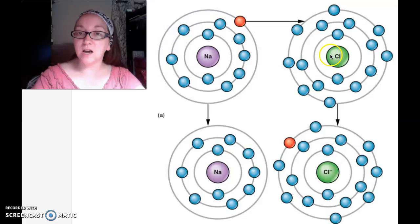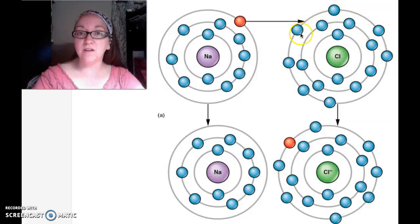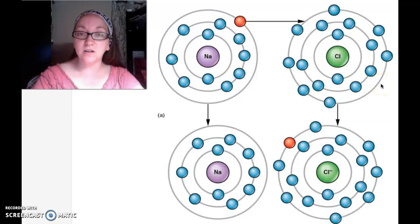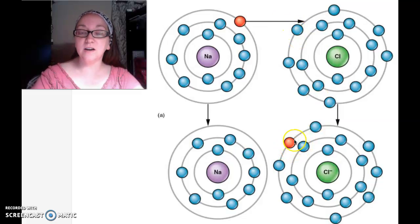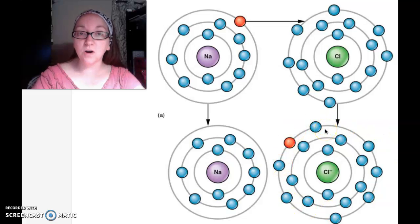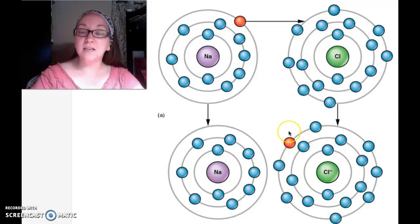Now this chlorine over here is the opposite. It has two in the first ring, eight in the next ring, and then seven electrons in the outer shell. It would like to have eight to fill that outer valence electron shell. So if it takes that electron from sodium, it now has eight, but that's more than it should have as a stable element. One more means it has a negative charge because it has an extra electron.